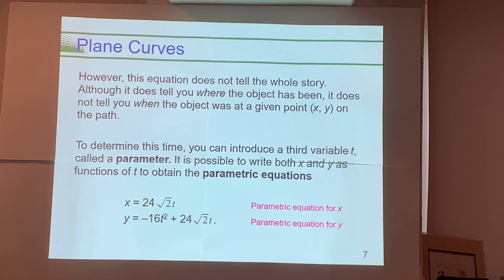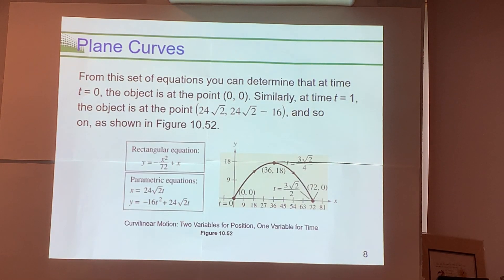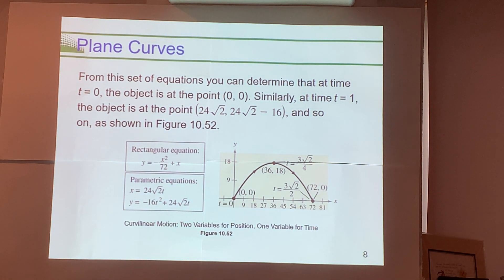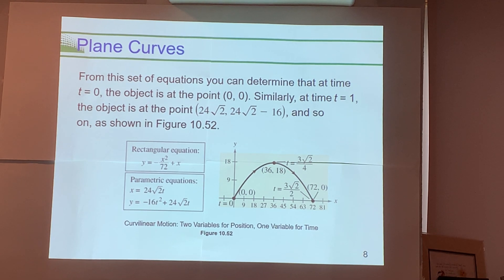It's possible to write both x and y as functions of t. For this specific example, these would be the two parametric equations, and they produce the same graph. However, you'll notice something on this graph that's normally not present — the direction of the graph. By introducing t, and thinking of t as time that increases, we can represent what's called the orientation of this curve.